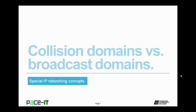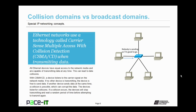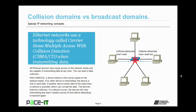Now let's discuss the difference between collision domains and broadcast domains. First, I need to talk about carrier sense multiple access with collision detection. All Ethernet networks use this technology, also called CSMA/CD, when transmitting data. In an Ethernet network, all Ethernet devices have equal access to the network media and are capable of transmitting data at any time. This can lead to data collisions. With CSMA/CD, a device listens to the carrier signal on the network media. If no other device is transmitting, the device is free to send data. If another device sends data at the same time, a collision is possible, which can corrupt the data.